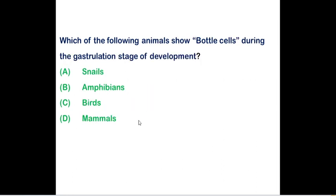Which of the following animals show bottle cells during the gastrulation stage of development? Bottle cells you can find during the process of amphibian gastrulation. These are the first cells that will be engaging in cellular movement during gastrulation. You can find this particular cell in blastoporal lip. These cells are responsible for formation of invagination cup in amphibian gastrulation.